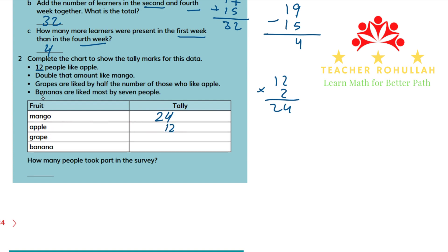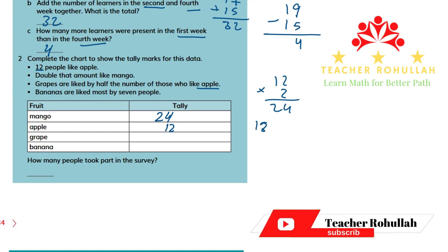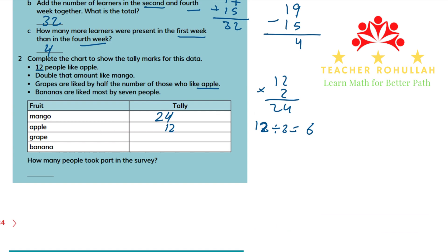For grape, it says grapes are liked by half the number of those who like apple. How many people like apple? 12. So half of 12 — that is 12 divided by 2 — which is 6. So 6 people liked grapes. How many people like banana? Bananas are liked most by 7 people, so we write 7.